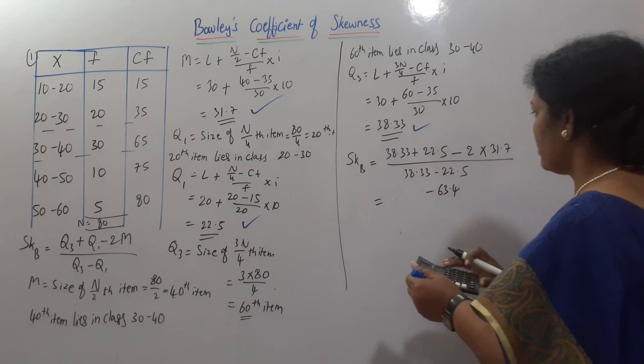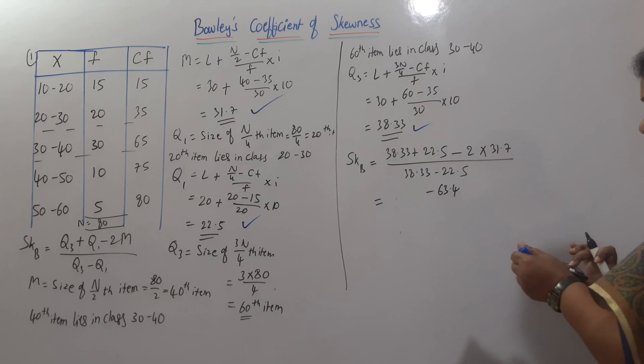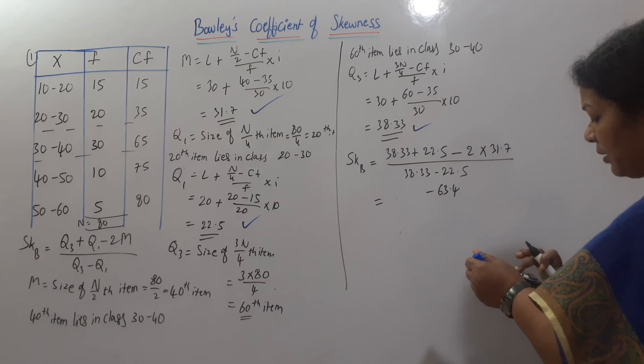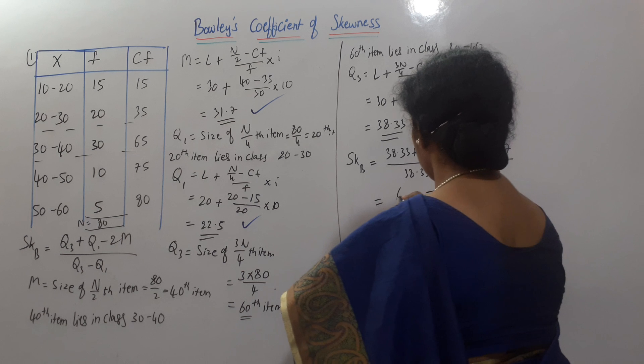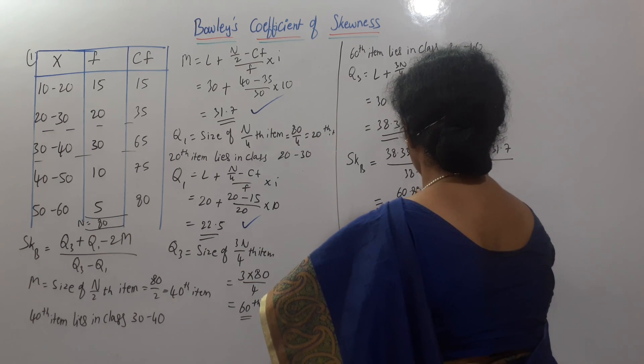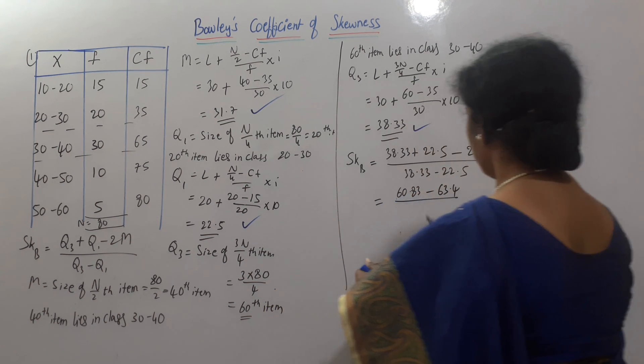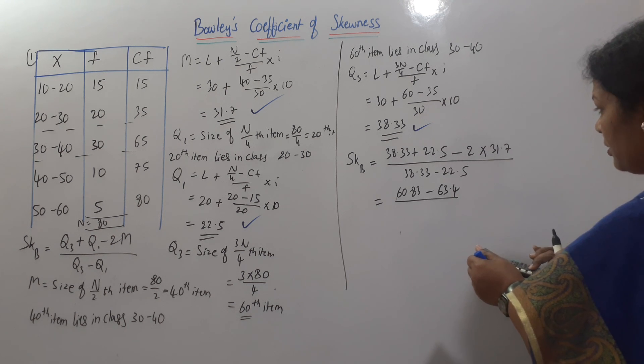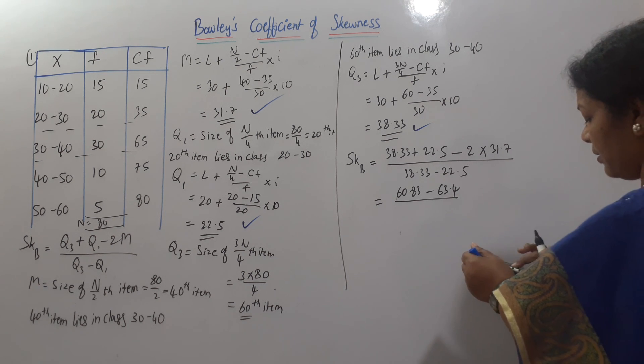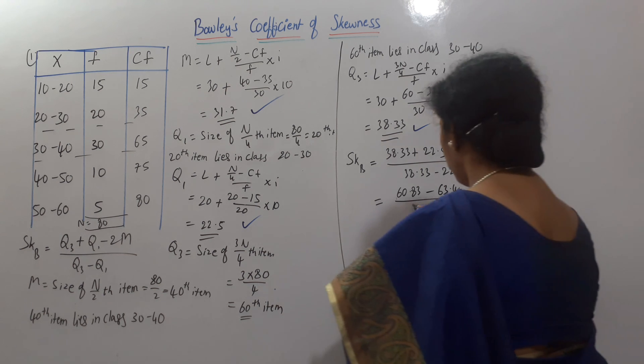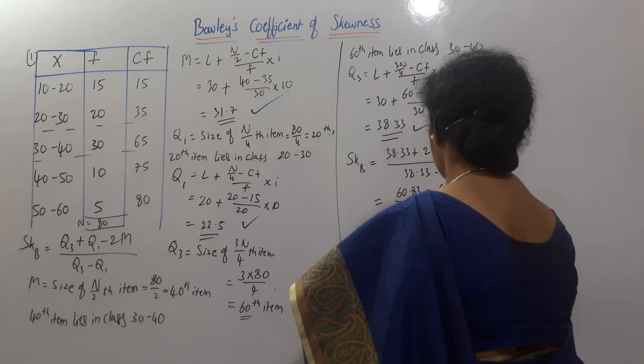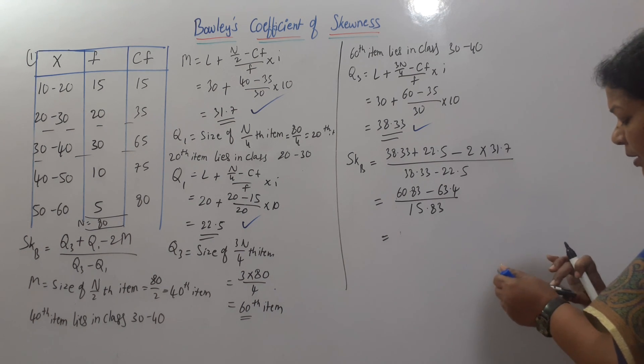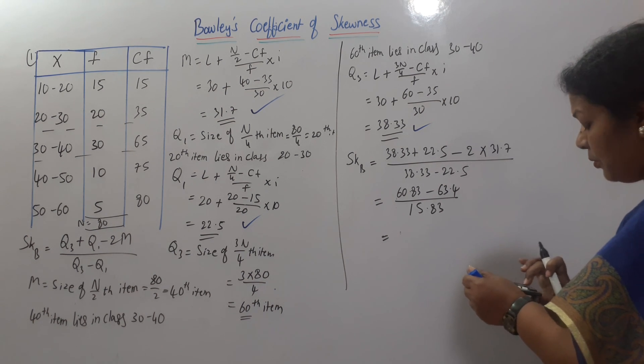And this, if you add 38.33 plus 22.5, it comes to 60.83. If you subtract this, 60.83 minus 63.4.